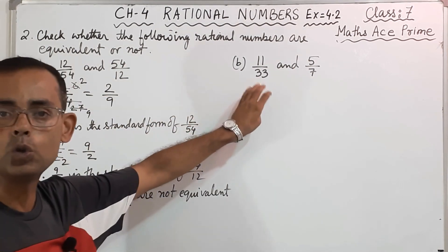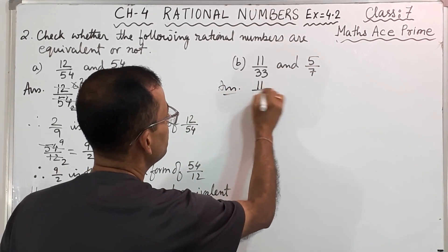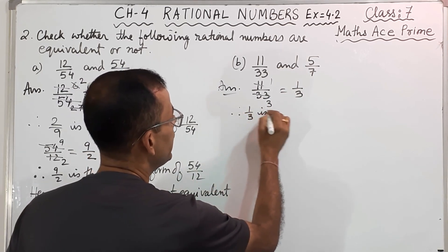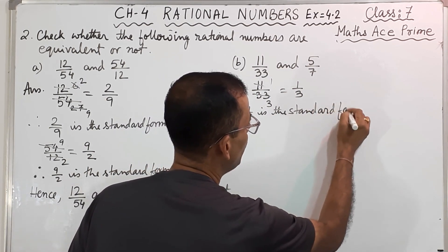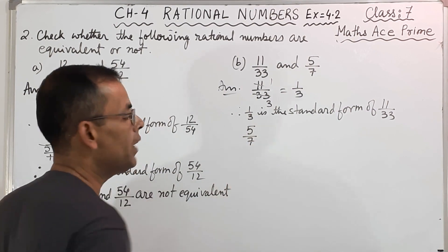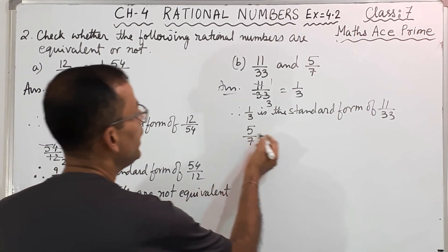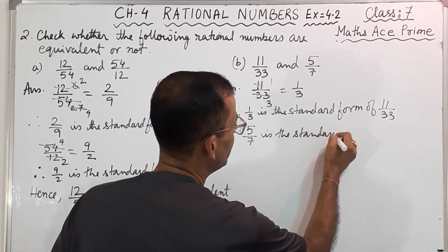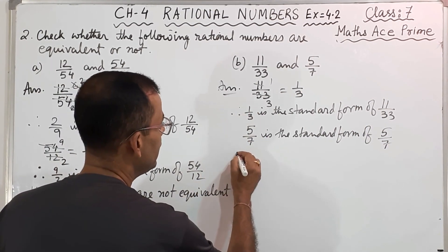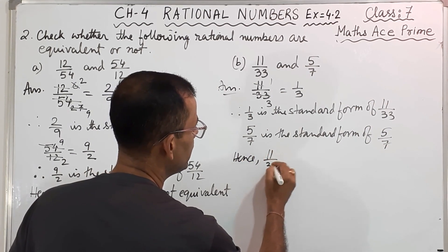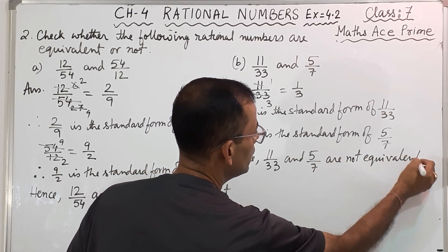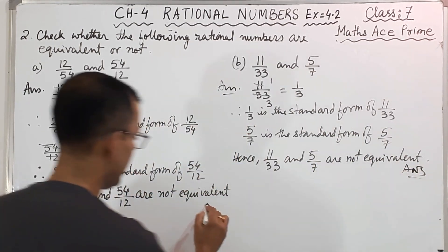Now 2B, same way we will do. So 11 by 33 — you can cut: 11 ones are 11, 11 threes are 33. So what you get? 1 by 3. Therefore, 1 by 3 is the standard form of 11 by 33. And the next one is 5 by 7. Now 5 by 7, you cannot reduce it, so it is the standard form of 5 by 7. They are not same. Hence, 11 by 33 and 5 by 7 are not equivalent.